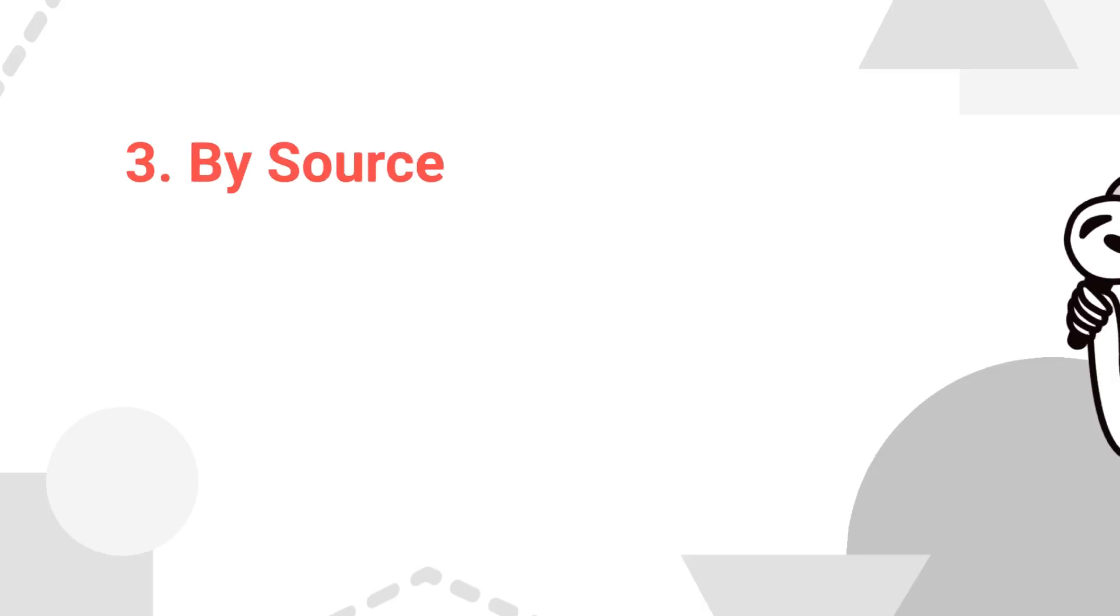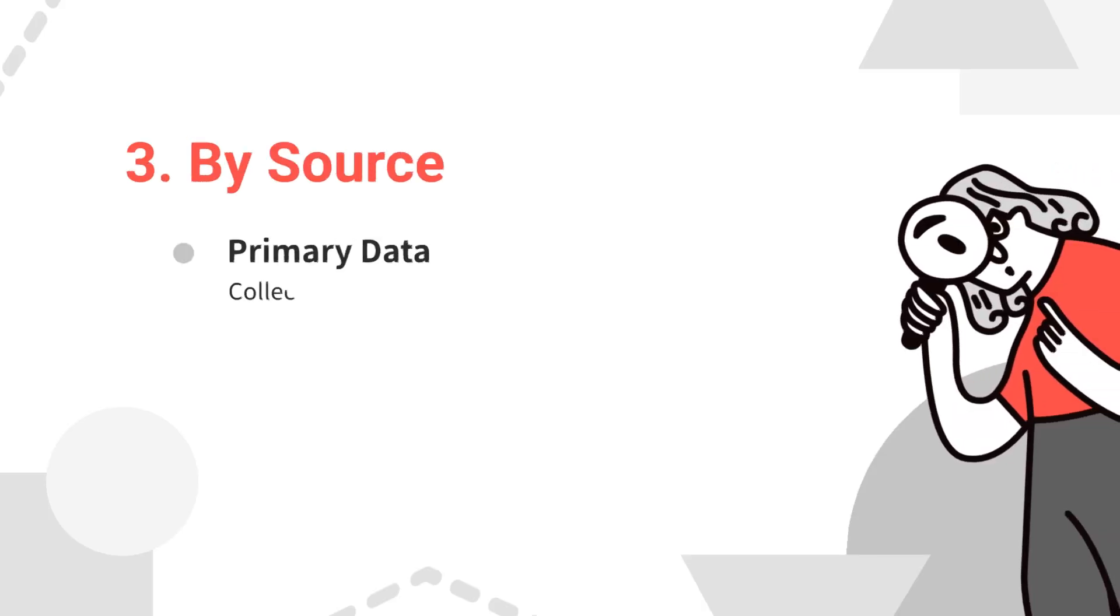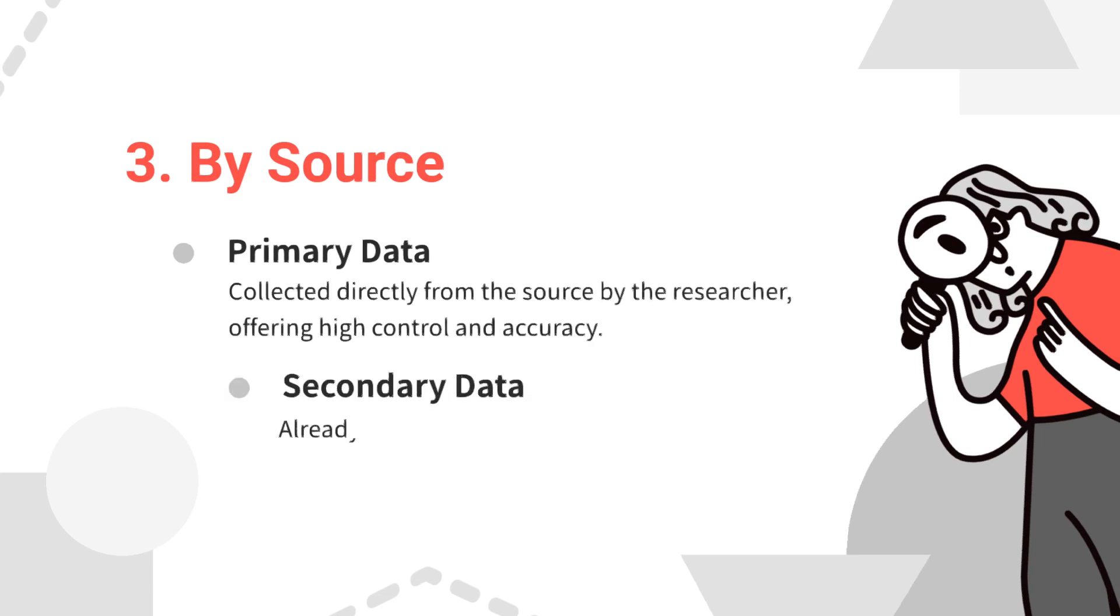By source, primary data is collected directly from the source by the researcher, offering high control and accuracy. Secondary data is already collected by someone else, readily available but might require careful evaluation for biases and limitations.